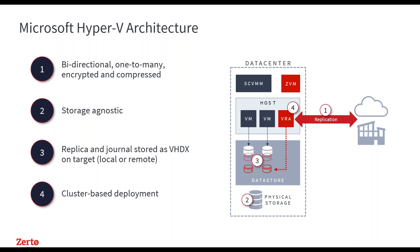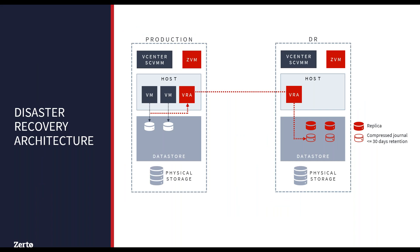Looking at the architecture, there are two main components in the Zerto ecosystem. The Zerto Virtual Manager is the quarterback — the management component — and then we have Virtual Replication Appliances, which are the worker nodes that replicate data from site A to site B. The ZVM has a one-to-one relationship with your vCenter Server or SCVMM server, and VRAs have a one-to-one relationship with the number of hosts you have. You can automatically add VRAs when you add hosts and automatically remove them when you remove hosts.